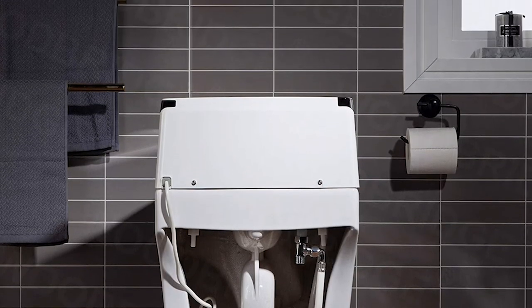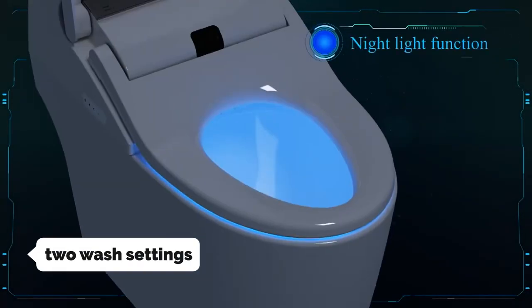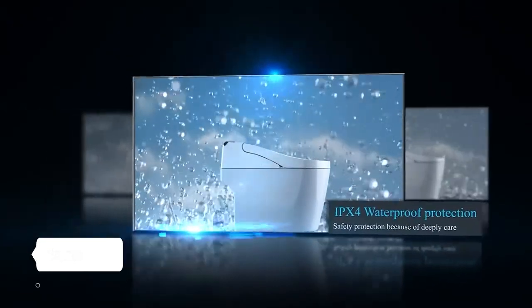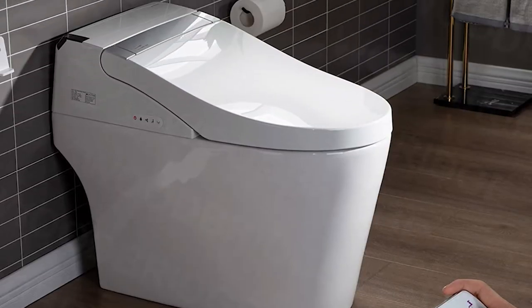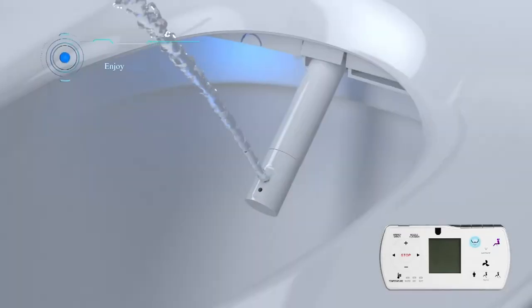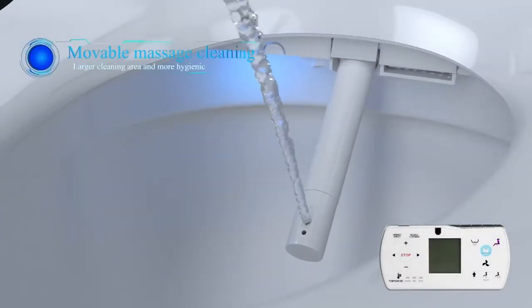The B0960S bidet toilet seat has two wash settings, a feminine wash and a posterior wash. The feminine wash setting uses a narrower spray pattern that is designed to clean the vaginal area. In comparison, the posterior wash setting uses a wider spray pattern that is designed to clean the anus and surrounding area.